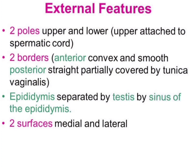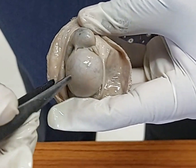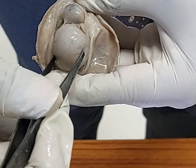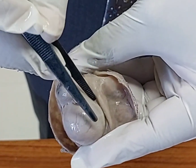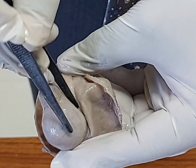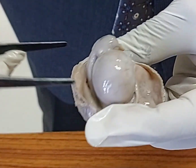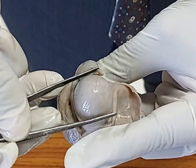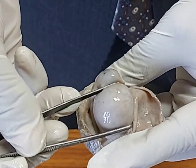What is the length, breadth, and the anteroposterior diameter? The breadth is about 2 to 3 centimeters, and the anteroposterior diameter is 3 to 4 centimeters, and the length — from upper pole to lower pole — is about 4 to 5 centimeters.